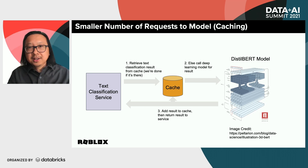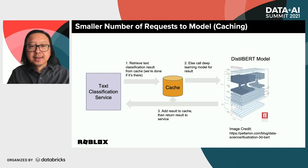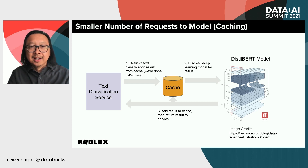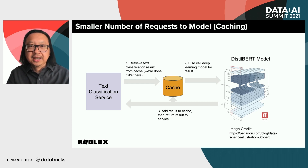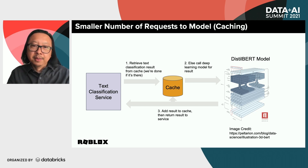At this point, we've talked about the three biggest keys to scaling BERT inferences: smaller models, smaller inputs, and smaller weights. But we have two more really important ones to share, and they're very easy. The next one isn't rocket science — we also get a big boost in throughput through simple caching. This is an example of less is more as well, because now we're effectively sending a smaller number of requests to our DistilBERT model.